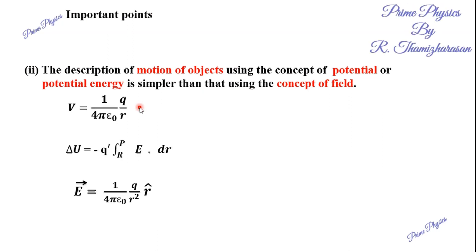Now, what is the description of motion of an object in one electric field? There is one charged particle in motion — we will explain. That is the concept of field, concept of potential, and potential energy. That is very simple and easy.